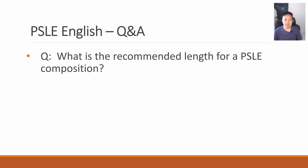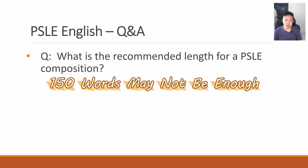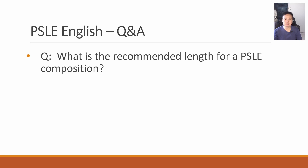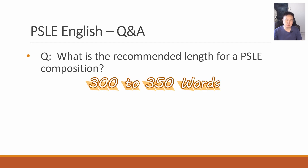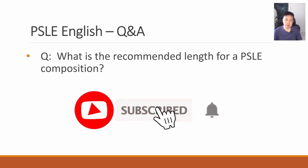What is the recommended length for a PSLE composition? My personal recommendation is somewhere between 400 to 500 words. The minimum word count is only 150 words, but that is just too little. However, writing 500 words is excessive unless your language is super strong and you can write super fast without making too many mistakes. It is more sensible to go for around 300 to 350 words maximum, so that you leave yourself more time to check through mistakes, make sure there are no plot holes or language errors.